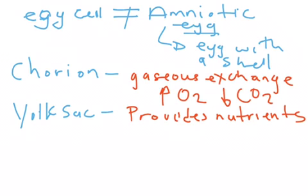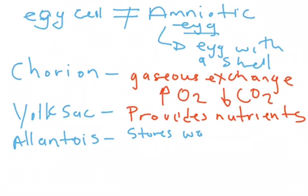The yolk sac provides nutrients to the growing embryo within the egg. Next we have the allantois, and the allantois stores waste products of the embryo.